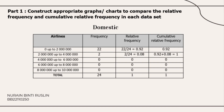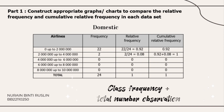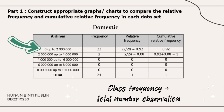After that, we need to find the relative frequency. This is the formula that I use to find it: class frequency divided by total number of observations. For example, 22 divided by 24 equals 0.92. So this is the relative frequency for the domestic, 0 up to 2 million.